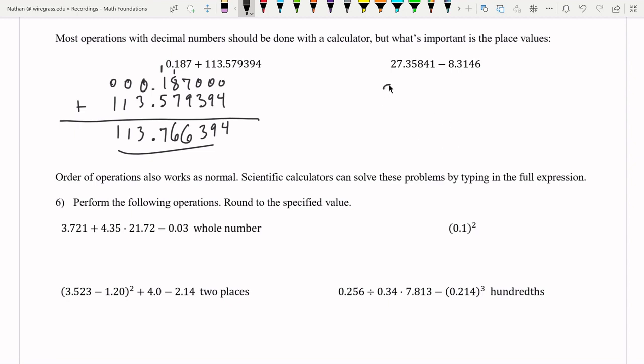Okay. So subtraction works very similarly. 27.35841 and I'm going to line up the decimal points. And now I can subtract. So I'm going to add a zero in for the missing place value. I don't need to add a zero here, but you could.